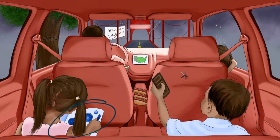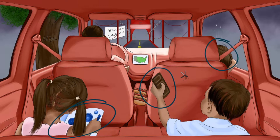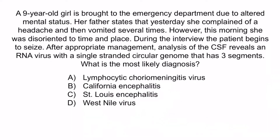From the image, recall that the circles should help you remember that California encephalitis has a circular genome. The three-segmented candy bar should help you remember that it has three segments. The red-colored interior of the car should help you remember that it's an RNA virus. And finally, the boy getting rained on should help you remember that it causes encephalitis. A, C, and D can all cause neurological deficits, but only California encephalitis has a circular genome with three segments. So again, the correct answer is B, California encephalitis.